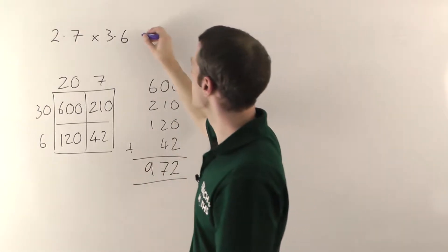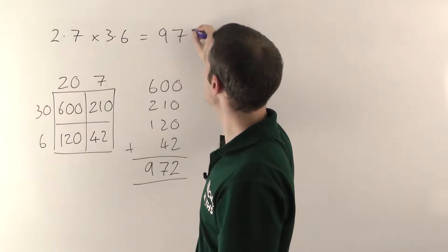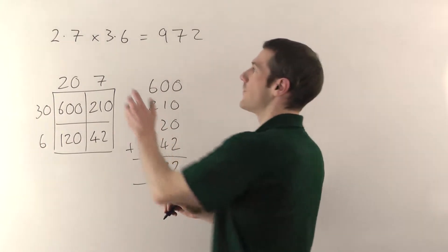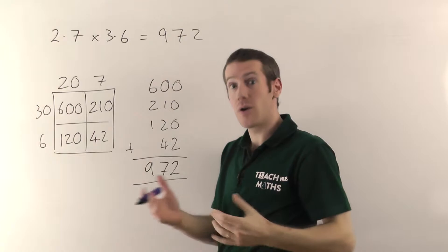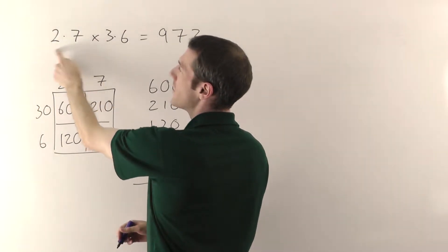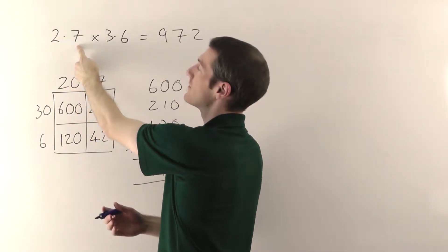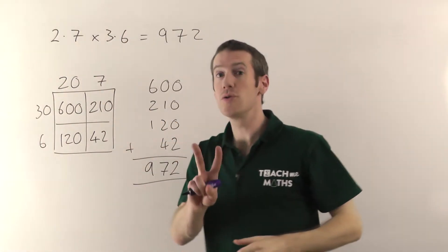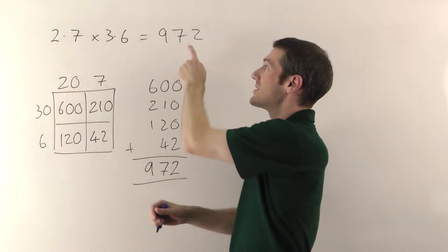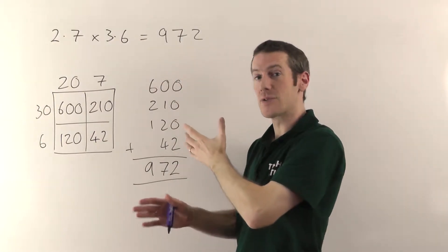And then all you've got to figure out is where to put the decimal points. Now what you look for is where the decimal points are in the question. How many decimal places are there altogether? Now this number has got 1 decimal place. It's the 7. This number's got 1 decimal place as well. So altogether you've got 2 decimal places.